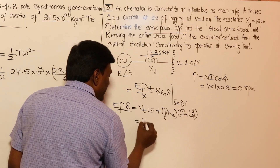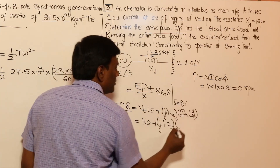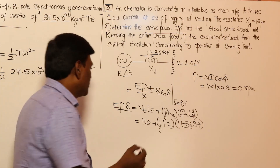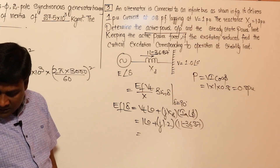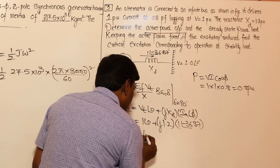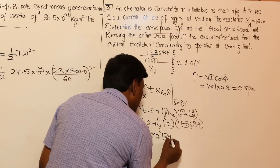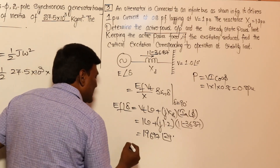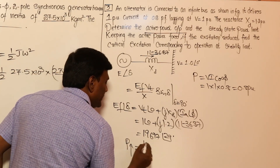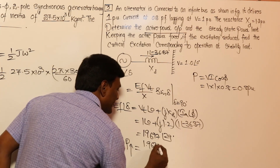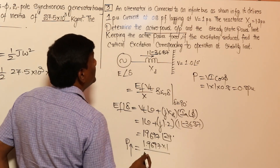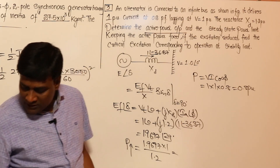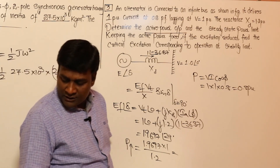Solving, I got E_F = 1.9697 at an angle of approximately 29 degrees. So the maximum power = E_F×V_T / X = 1.9697 × 1 / 1.2. That gives 1.6414 per unit.